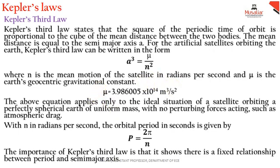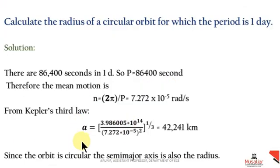a = cube root, that is raised to 1/3, 3.98 / (7.272 × 10⁻⁵)². Taking this cube root, we can get 42,241 kilometers. That's all about the problem. Thank you.